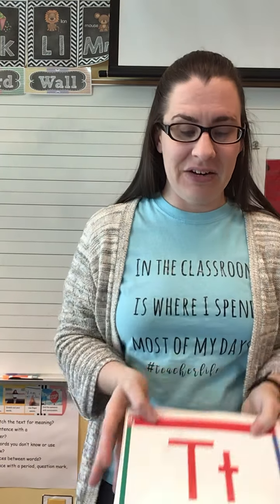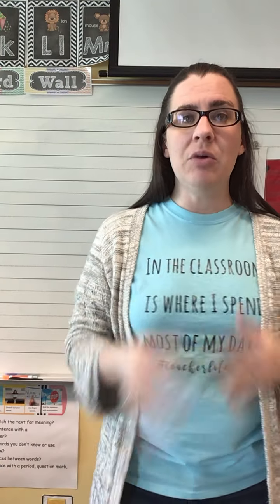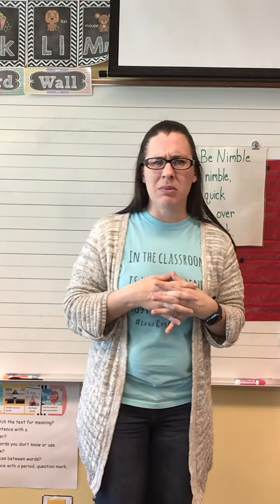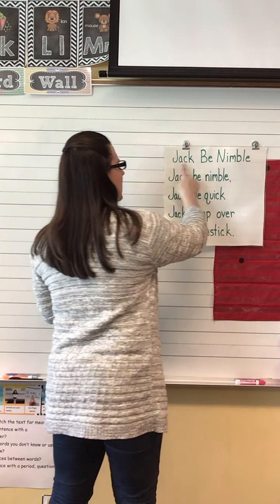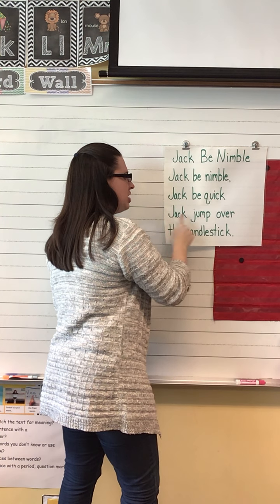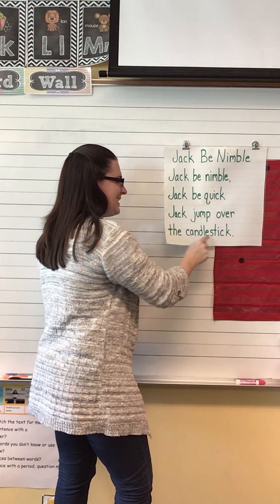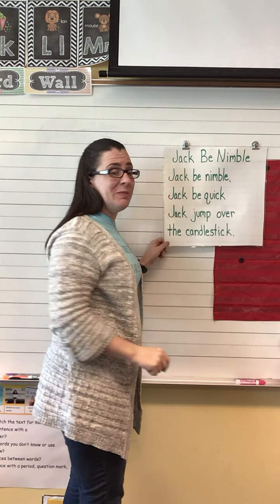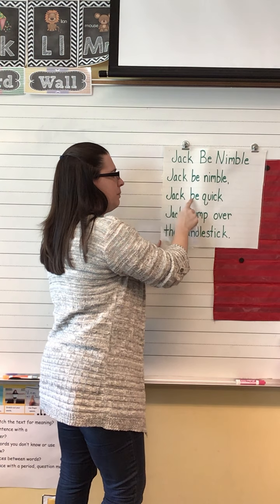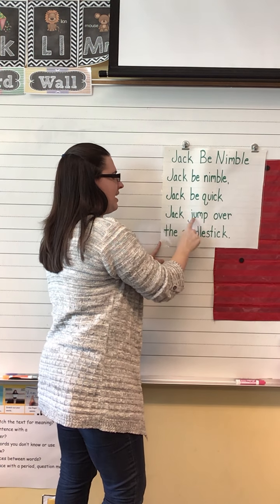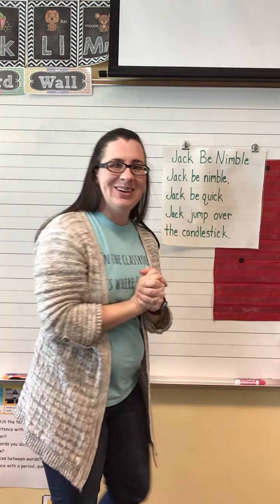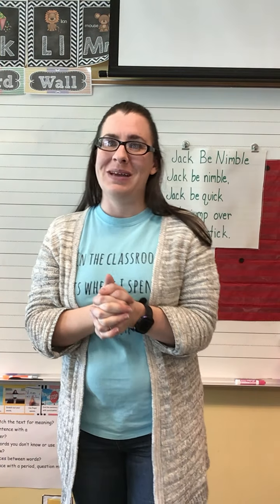I've got a different nursery rhyme behind me. I'm going to read it the first time and then the second time you help me, okay? We've done this one before — it's Jack Be Nimble. Jack, be nimble. Jack, be quick. Jack, jump over the candlestick. Okay, now do it with me. Jack, be nimble. Jack, be quick. Jack, jump over the candlestick. Very good, friends. I'll see you back here tomorrow to do some more big book. Bye.